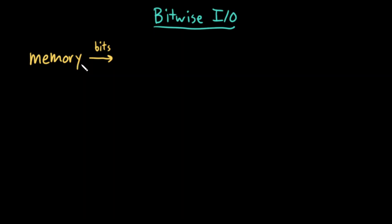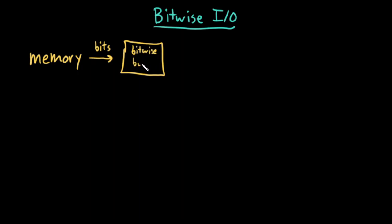It turns out that I can actually do a small modification to this workflow and still be able to use bitwise I/O. So instead of writing the bits directly to the output stream, because the output stream needs bytes, I could write bits to my own bitwise buffer. I can have a single byte — so this bitwise buffer could be one byte — that I write bit by bit into. Then, once I've written eight bits, I can write that single byte that was the buffer to my output stream.